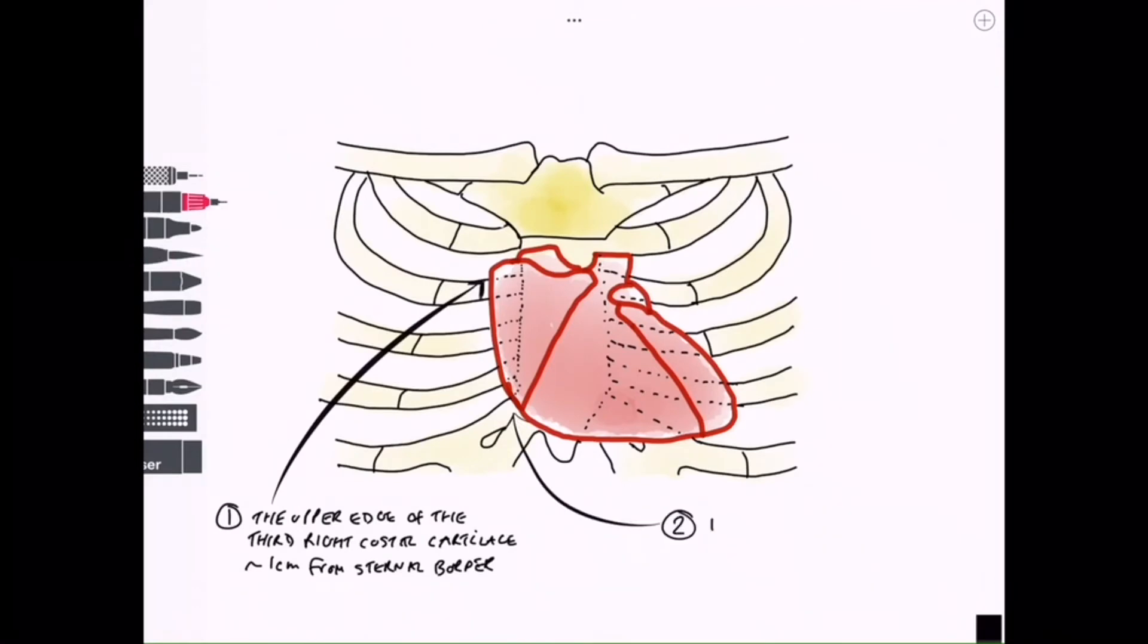Point two here, this position is inferior to point one and is formed by the middle of the right sixth sternocostal joint.